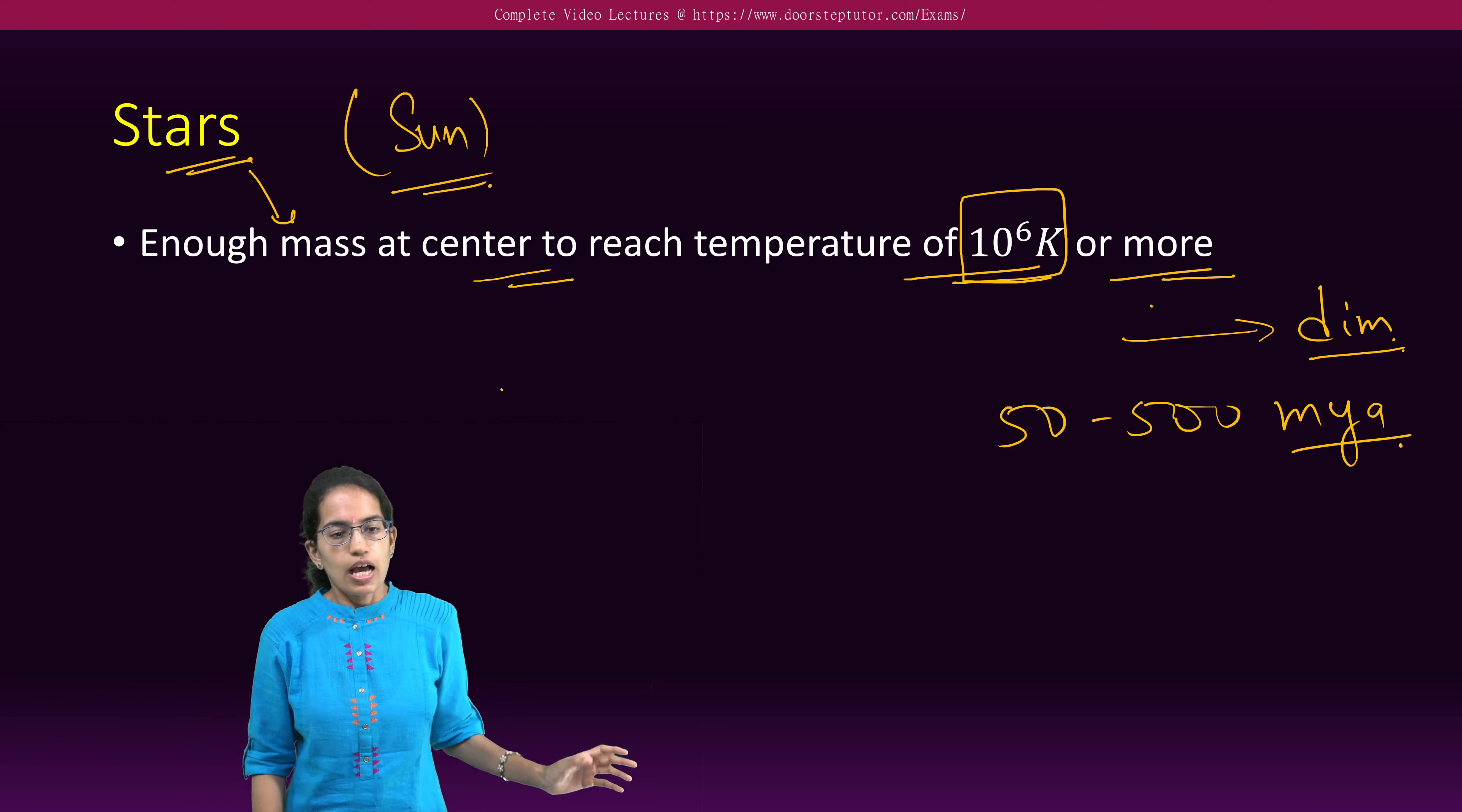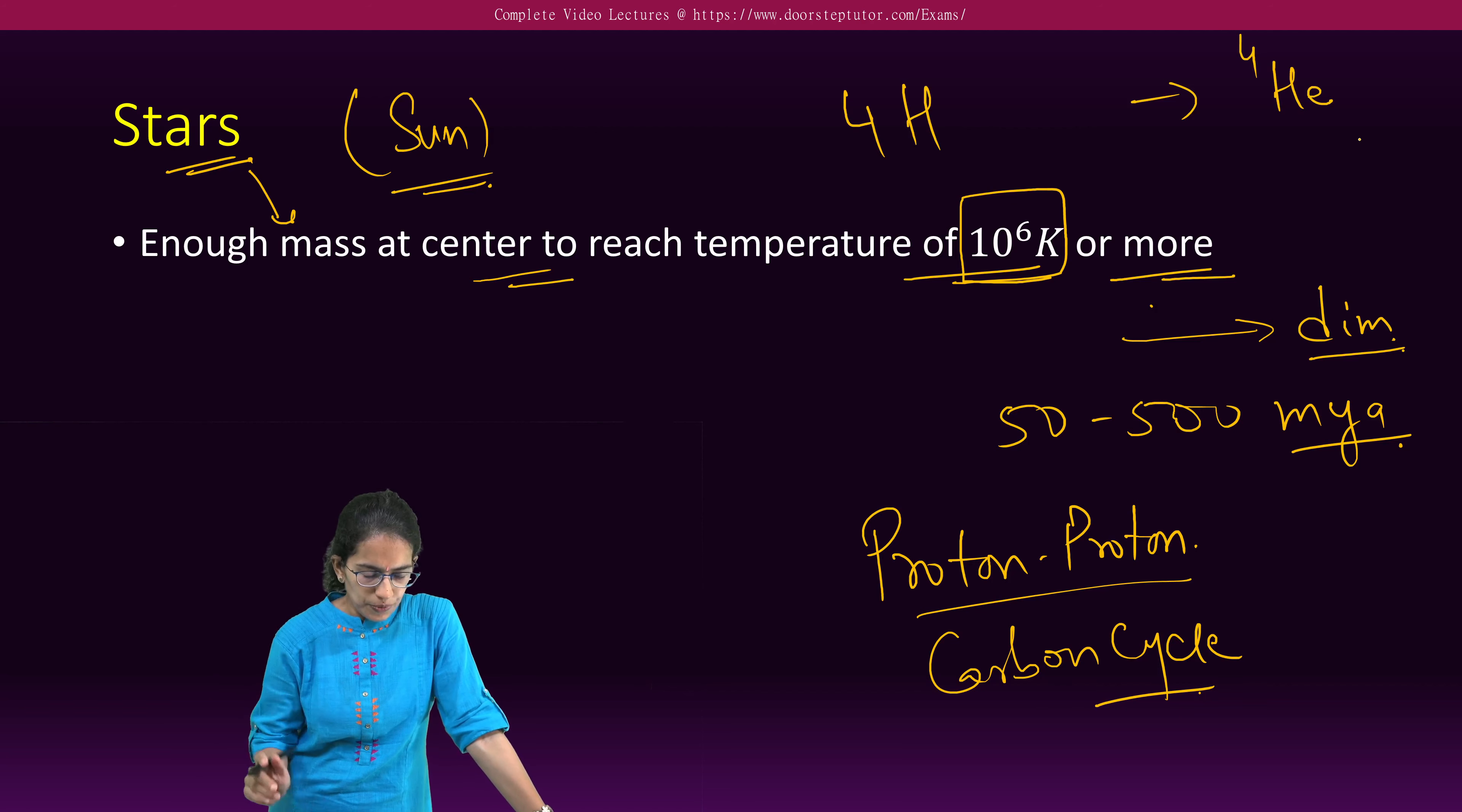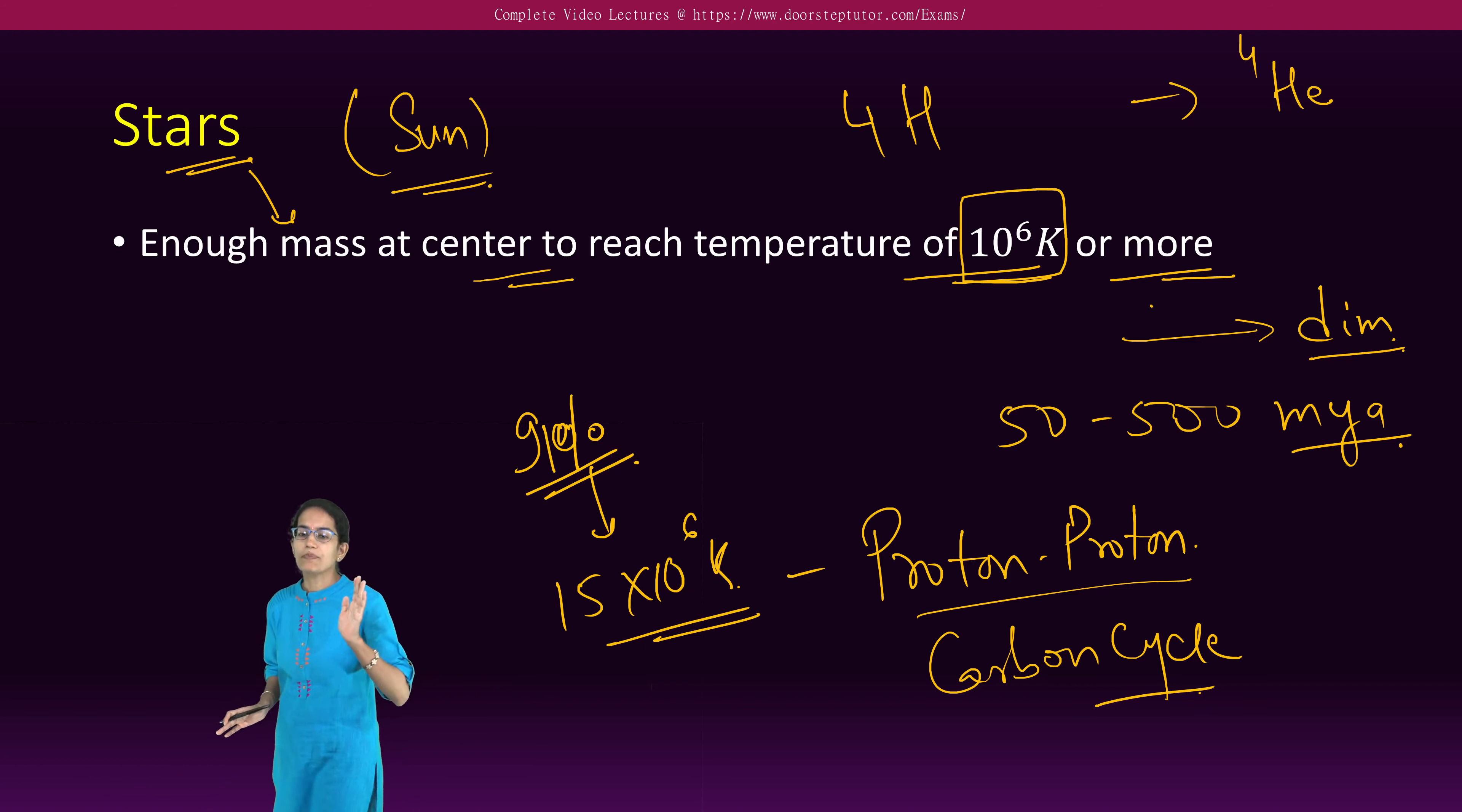Now these stars are formed by two mechanisms, sun as one of those. So these are formed either by proton-proton collision or they are formed by carbon cycle. The idea in each case is four hydrogen would combine to form a helium. Under the proton-proton collision which occurs at 15 into 10 raised to power 6 kelvins, sun is a good example where 91% of the total energy is generated by proton-proton collision.